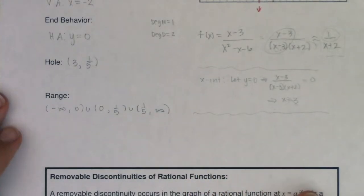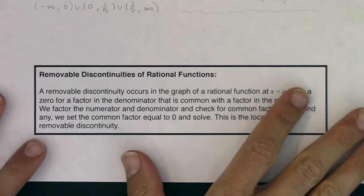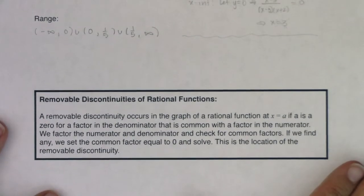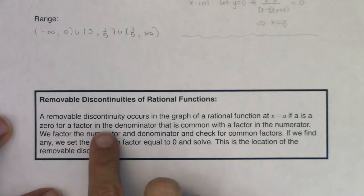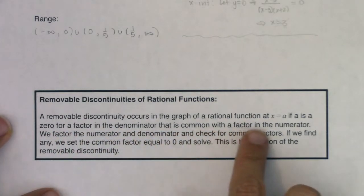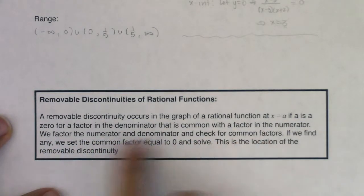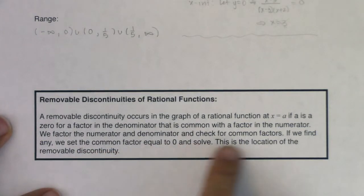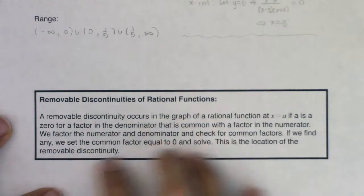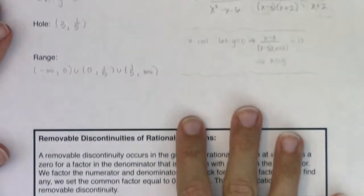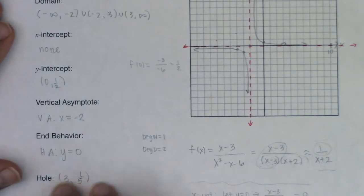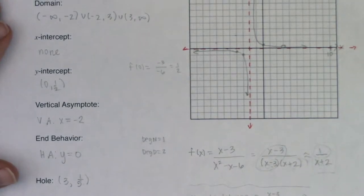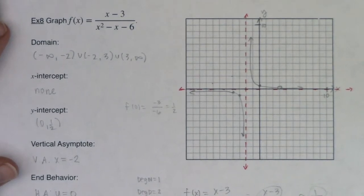A removable discontinuity occurs in the graph of a rational function at x equals a if a is a zero for a factor in the denominator that is common with a factor in the numerator. You factor the numerator and denominator, check for common factors; if you find any, set the common factor equal to zero and solve — that's the location of the removable discontinuity. This is just a fancy way of saying: if you have a factor common to numerator and denominator, that's the location of the hole.